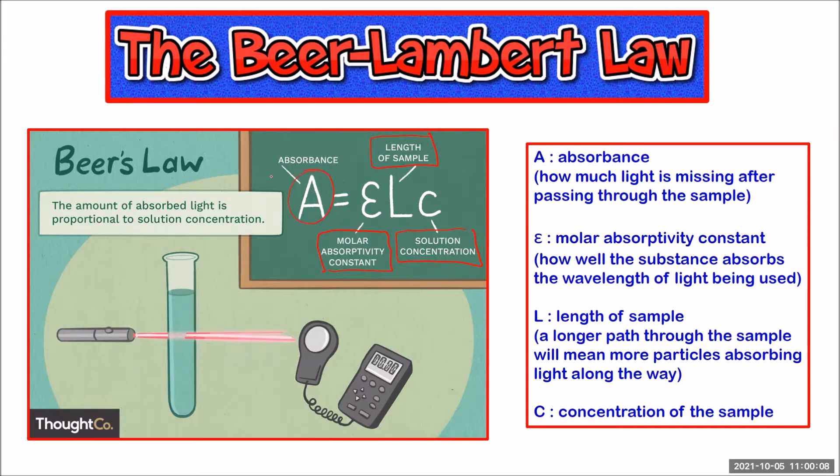So the absorbance is simply how much light is missing after it's been passed through the sample. The molar absorptivity constant is a measure of how well that substance absorbs the particular wavelength of light that is being used in the analysis. The length of the sample is important because obviously as the light passes through the sample, then some of the light is being absorbed. And if you're going to pass it through more of the sample, more of the light is going to be absorbed.